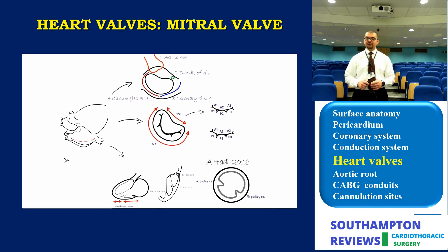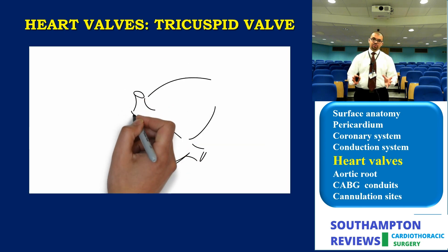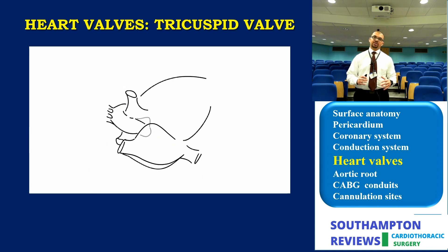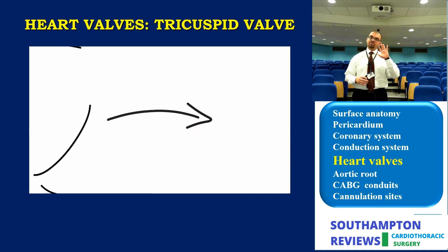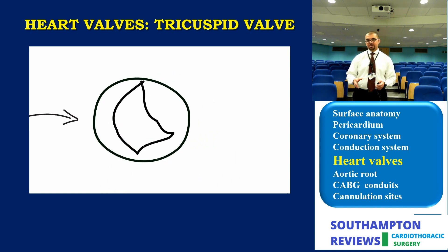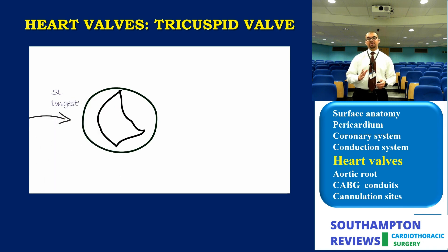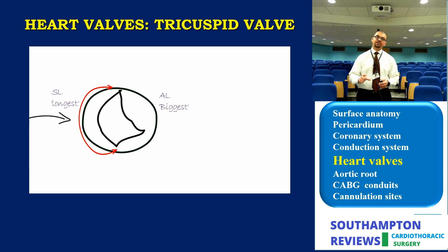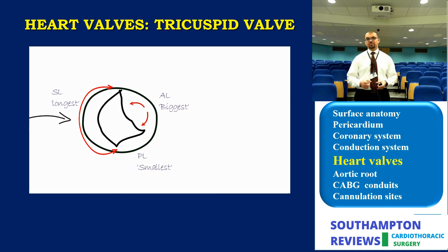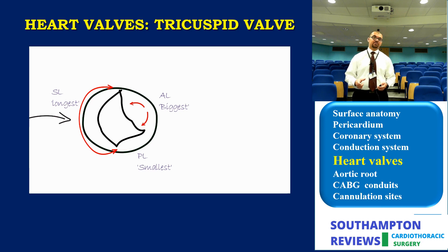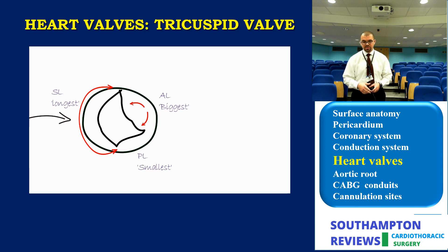Next is the tricuspid valve. Using the same system — leaflets, annulus, subvalvular apparatus, papillary muscles and cords, then annular relations — and remember there are always four structures surrounding any valve. There are three leaflets: the septal leaflet, which is the longest; the anterior lateral leaflet, which is the biggest in terms of area; and the posterior inferior leaflet, which is the smallest and sometimes even absent. This is important in bicuspidization — if the surgeon sacrifices one leaflet, it will be the posterior inferior, as it is the smallest. The annulus is brought together and the posterior inferior leaflet is sacrificed.